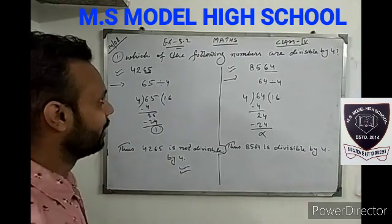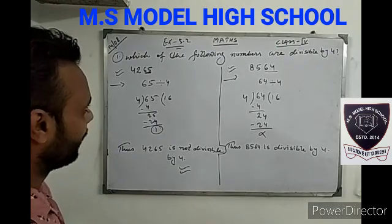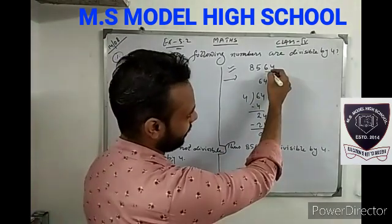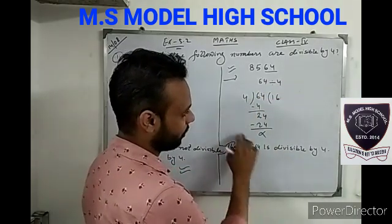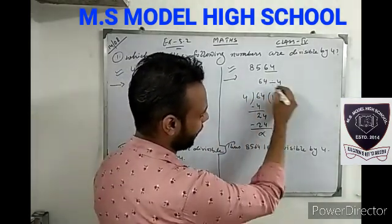This is a short form. Second, we will see the last two digits. 64 divided by 4. What happens? This will be divisible from 64.